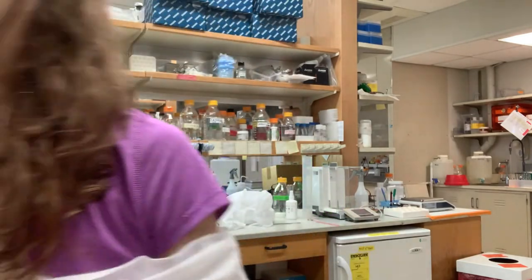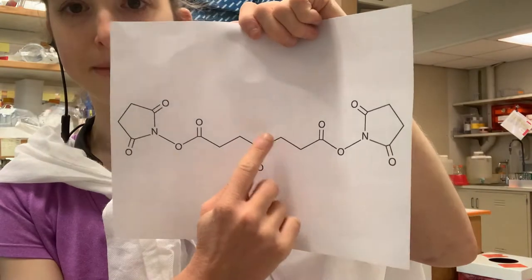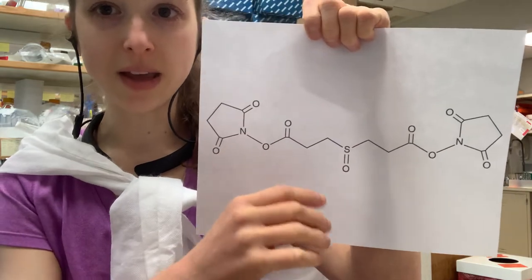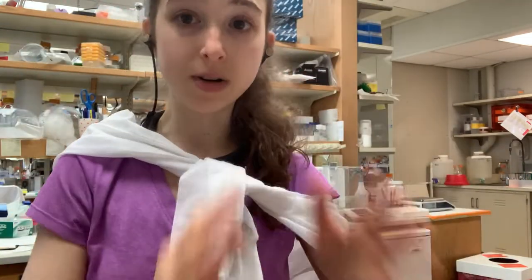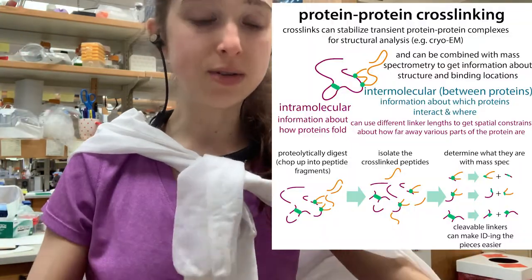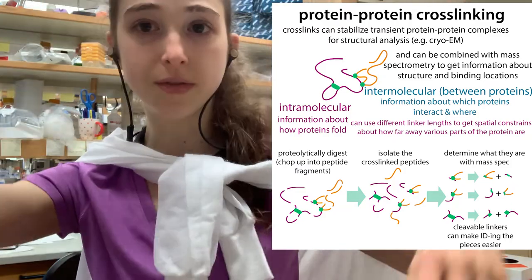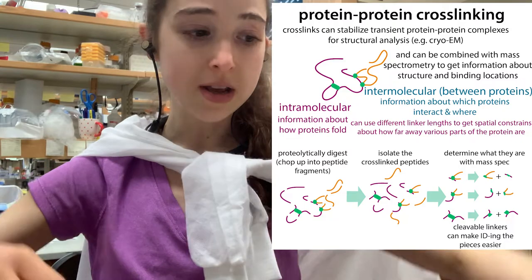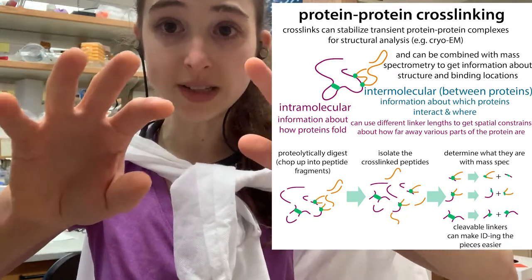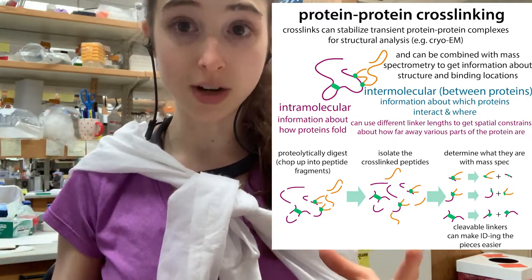You can use mass spectrometry to get this information. Using special cleavable spacers, you take your protein mixture, cross-link it, then cut it into peptide pieces and use mass spectrometry to figure out the mass and sequence of those pieces. You can do it in two steps: first isolate the cross-linked ones, figure out the mass of the cross-linked thing — two peptides from different proteins joined together — then break it apart using the cleavable part, figure out the masses of the individual pieces, and identify which parts were connected.